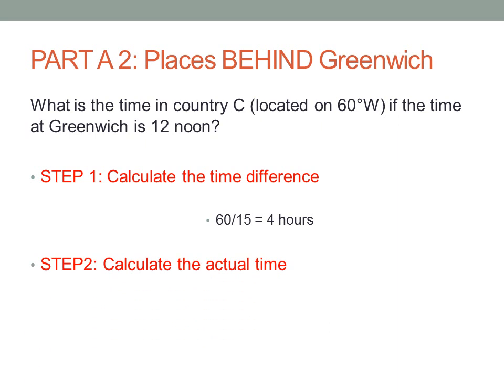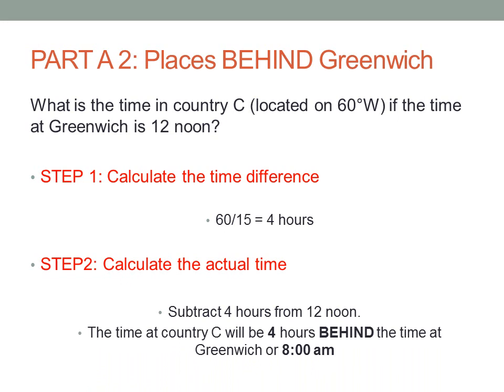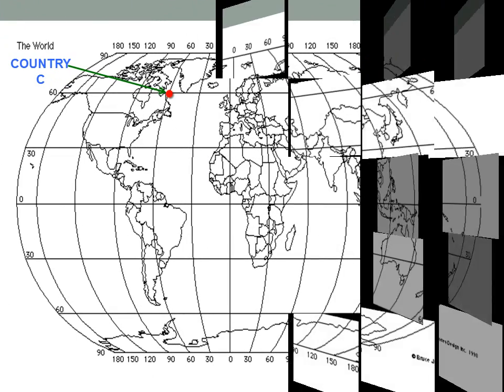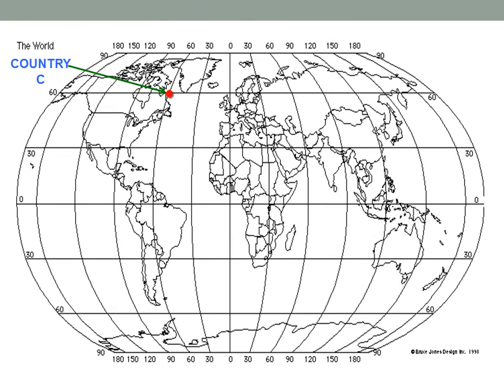To calculate the actual time, we will subtract the time difference from 12 noon. We're going to subtract 4 hours from 12 noon. The time at country C will be 4 hours behind the time at Greenwich, or 8 a.m. Here is our graphical representation of country C, located along 60 degrees west of the Greenwich meridian.